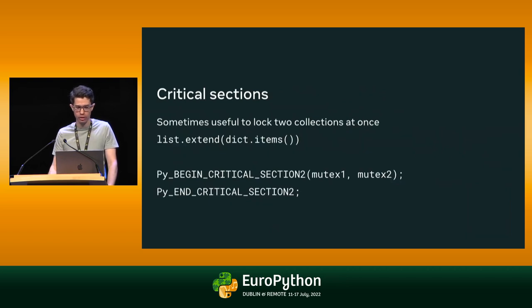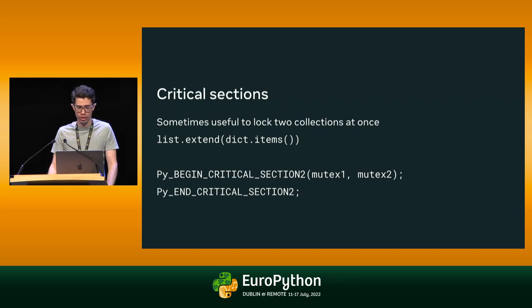There's one additional bit to the critical section API. Sometimes it's useful to lock two collections at once — for example, when extending a list with the items of a dictionary, it's useful to lock both the list because it's being modified, and the dictionary so that the extend operation sees a consistent view. So there's one additional API that locks two mutexes at once.